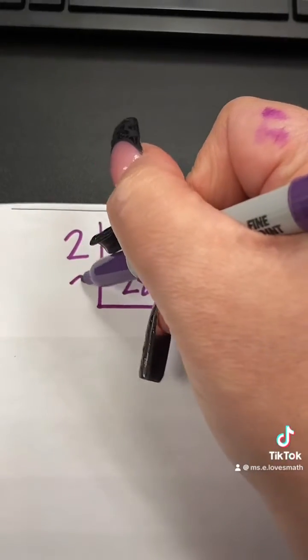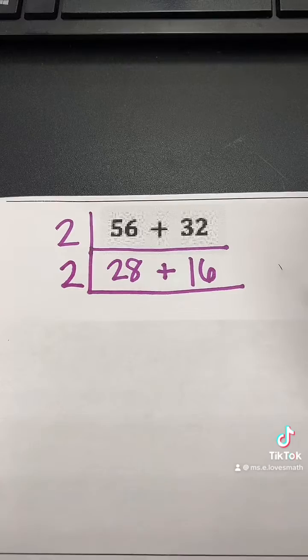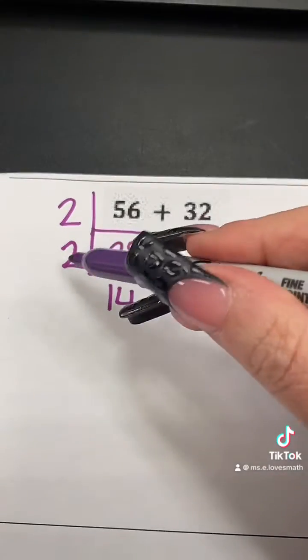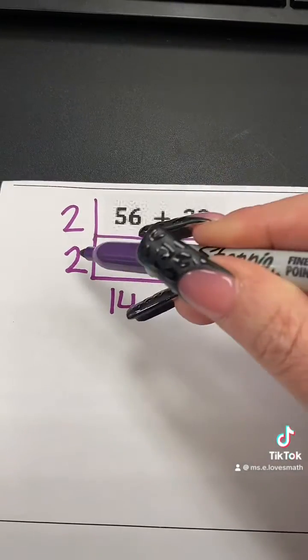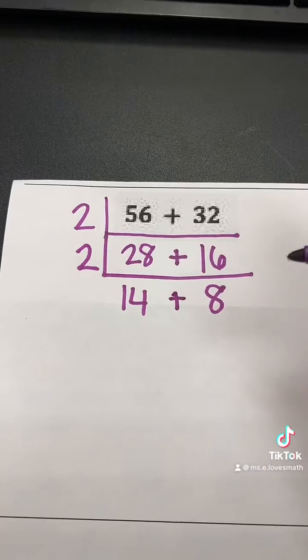So I'm going to build my ladder, and I'm going to put a 2 out here, and I'm going to divide both of these numbers by 2. 28 divided by 2 is 14. 16 divided by 2 is 8. Bring down the plus sign.